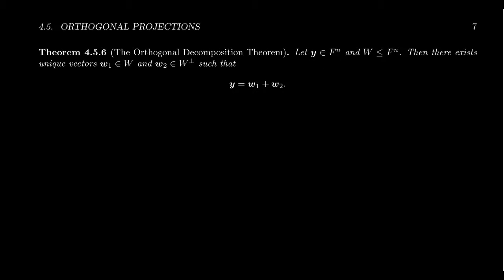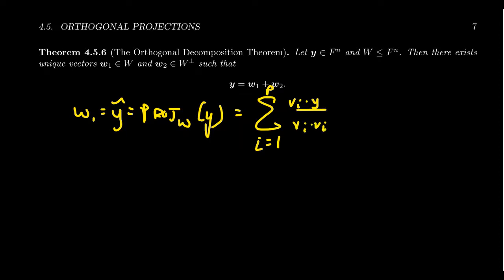The proof of this theorem is actually quite simple if you use orthogonal complements. The idea is you set w1 to equal y hat. More specifically, this is the orthogonal projection onto W of the vector y. So you take that vector. By construction, remember this thing will look like the sum where i equals 1 to p of v_i dot y over v_i dot v_i times v_i.